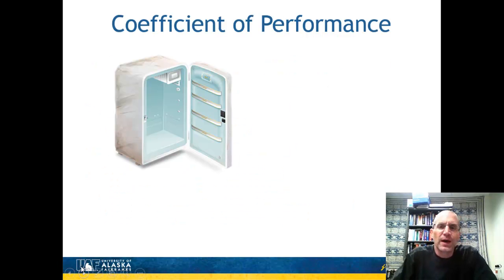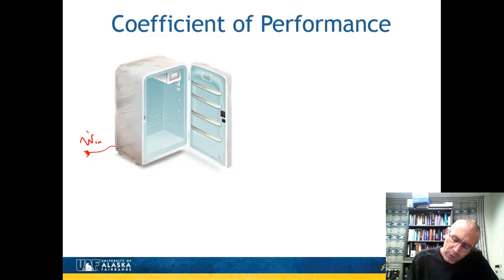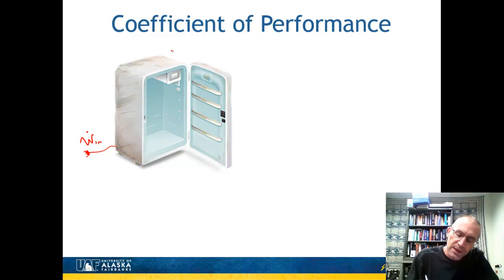Let's remind ourselves of what the coefficient of performance is for a refrigerator. Here I have a picture of a refrigerator. As we all know, the refrigerator has a power cord, which has a work input requirement. What happens with the refrigerator is we have this cold space, but it's sitting in a warm room, and so heat tends to go into this refrigerated space.